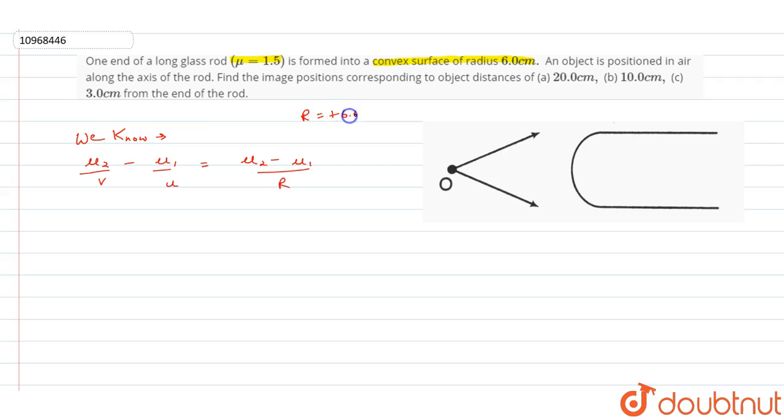This is in r's values. r is equal to plus 6.0. This is a positive direction. So, mu2 is given to 1.5 in the question. This is divided by v minus mu1. In air, this is 1. U is equal to mu1 by u is equal to 1.5 minus 1 divided by r, that is 6.